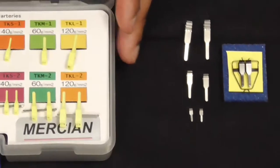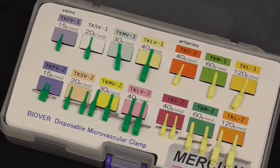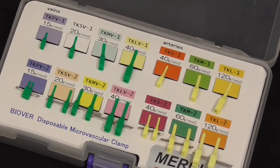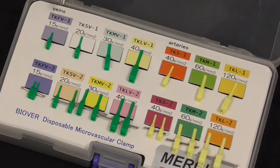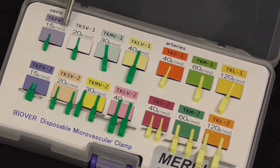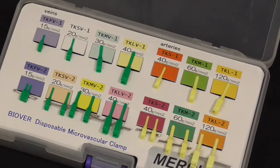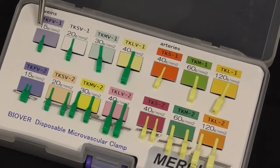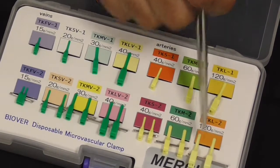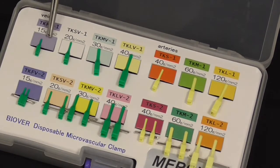There are new clamps that have been brought out—these are ones like Mercian, which are all disposable microvascular clamps. They're single clamps and double clamps. The interesting thing is they all have these little numbers on them: 15 grams, 120 grams. These refer to the clamp closing pressure—the force applied by the clamp in grams per millimeter squared over the maximum width of the vessel.